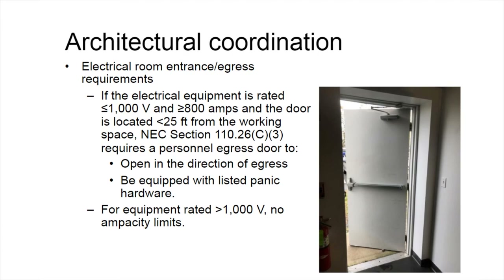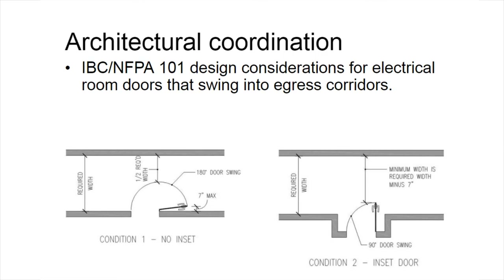Regarding egress doors: for equipment less than or equal to 1,000 volts and greater than 800 amps, the door must swing in the path of egress if within 25 feet of the workspace clearance space in front of the equipment. It also must have listed panic hardware so you can safely egress the room. For equipment rated greater than 1,000 volts with no capacity limit, if you're within 25 feet of the workspace, the door must egress in the path of egress.